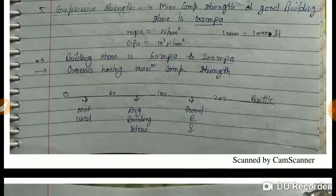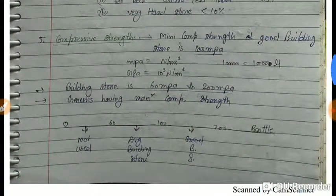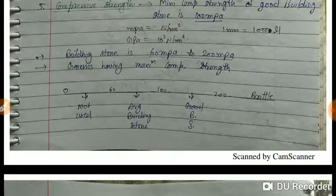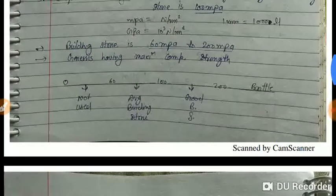Building stone has 60 to 200 MPa compressive strength. Granite has a very high compressive strength — it is a very hard stone. Compressive strength in the range 0 to 60 MPa is not suitable for building work. The range 60 to 100 MPa is average building stone used for simple work. The range 100 to 200 MPa is good building stone and may be used for all engineering or construction work.